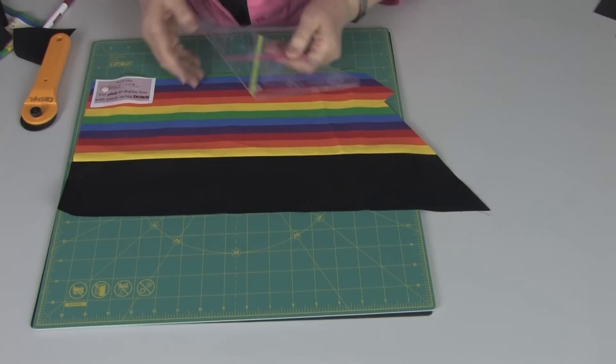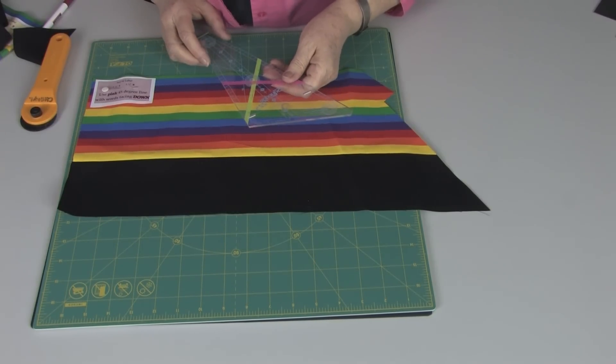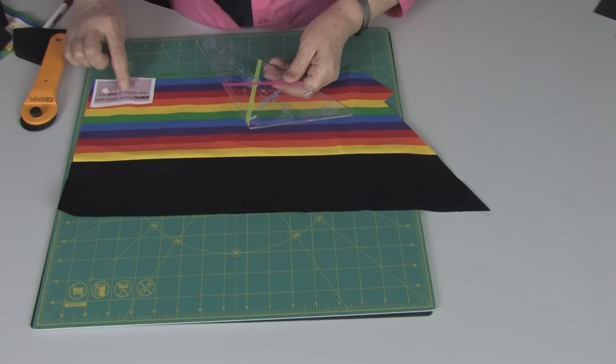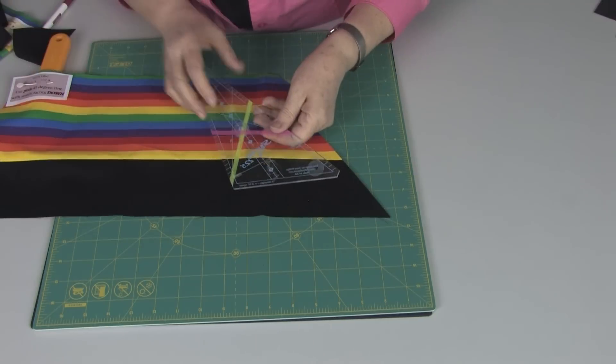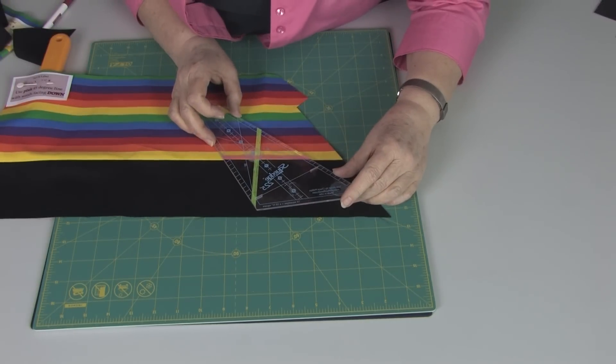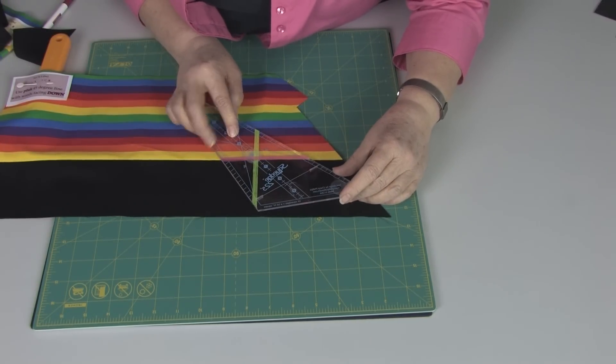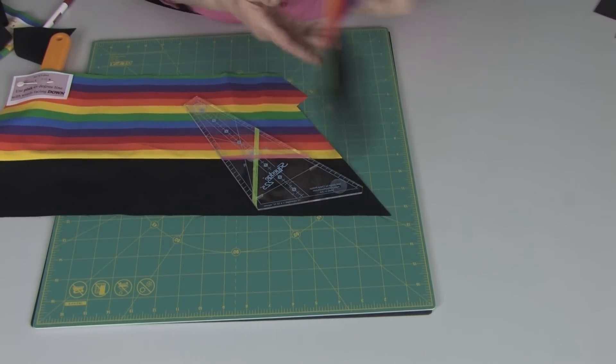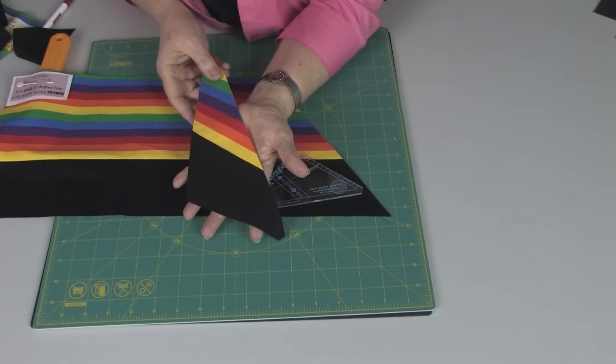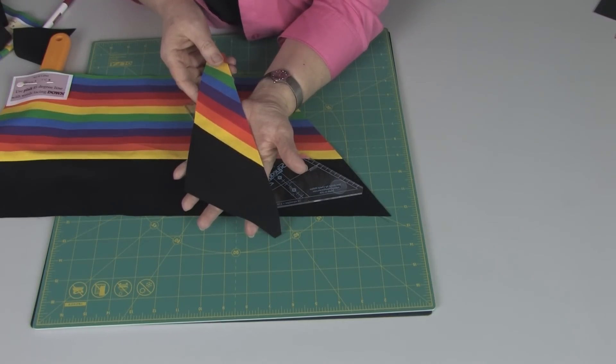This is our fourth strip set. For this one, we're going to again use the pink 45-degree line with the words down. And we'll come over here. Place those down. We're going to cut the entire tool this time. And I have one cut for you, which is here. Now let's see how these look together.